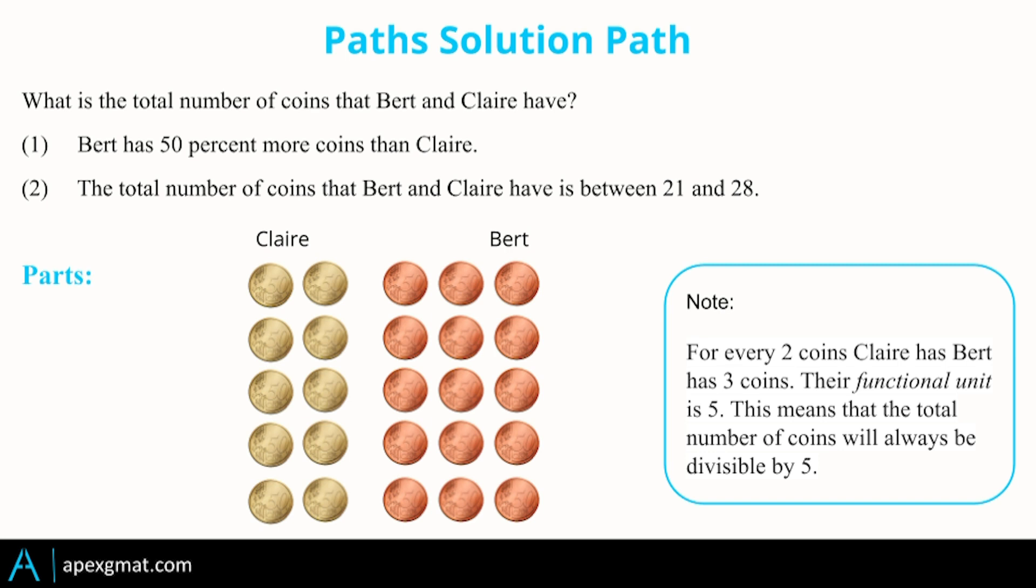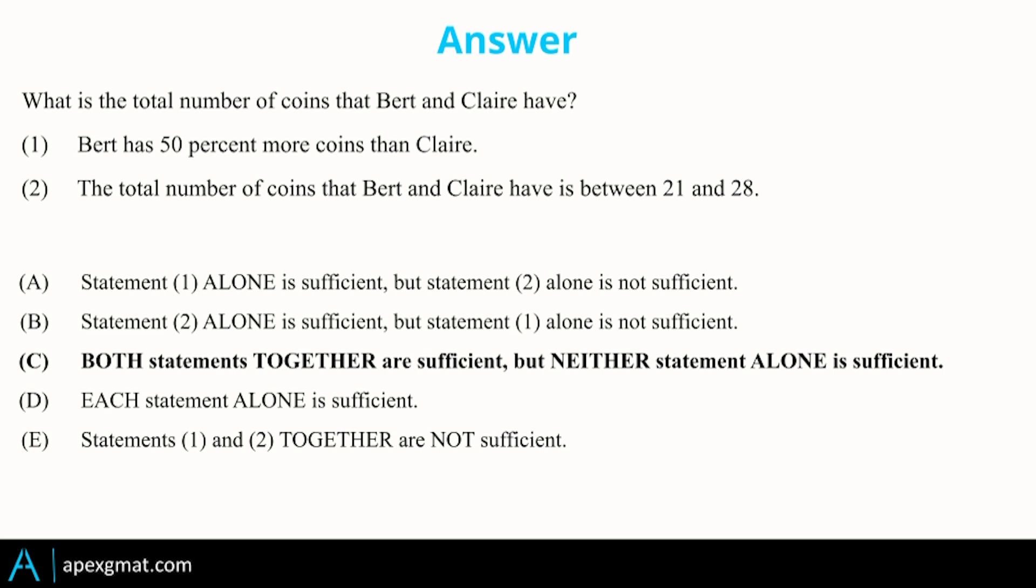Therefore, the only viable solution within our restricted range is 25. That is, it's the only number in there that's divisible by five. Therefore, both together are sufficient. We have the rule from number one and we have the restricted range from number two.